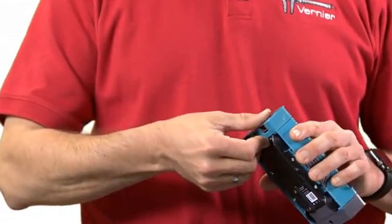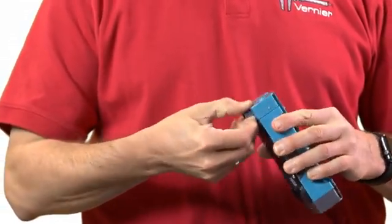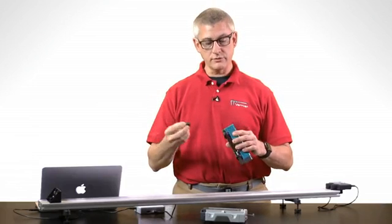The ends of the cart have easily removable tabs where you can keep magnets or hook and pile tabs for doing different kinds of collisions.